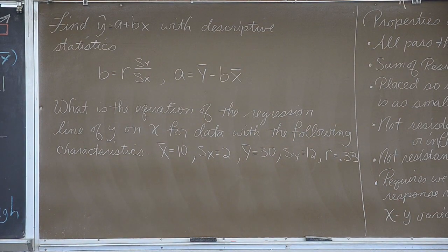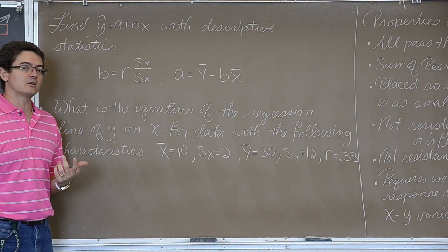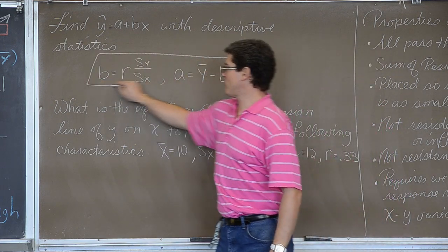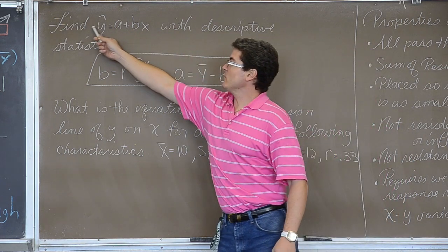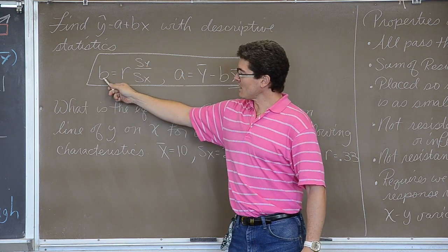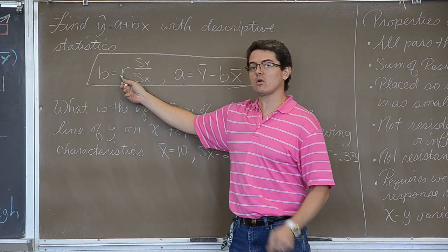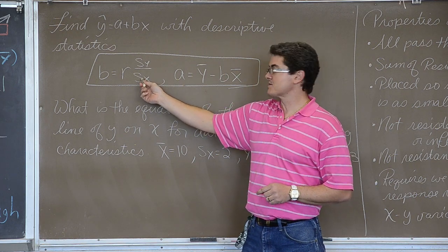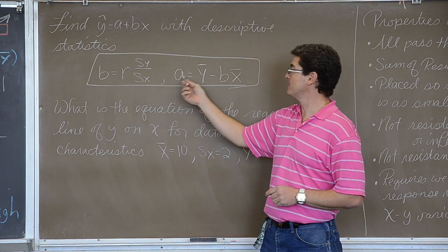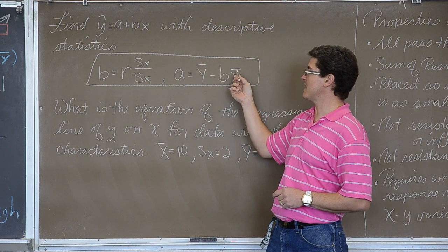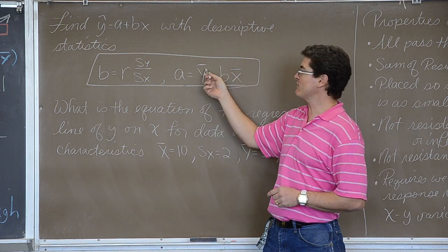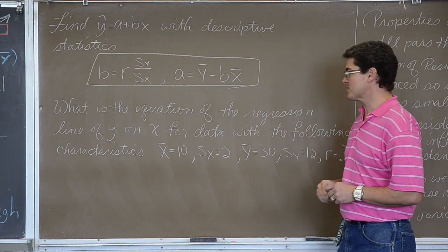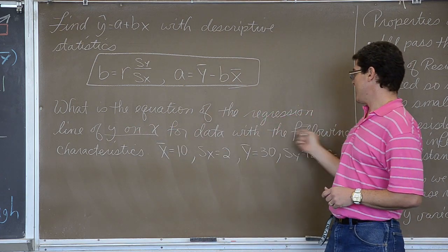Okay, when you take the AP exam, they try and ask you questions that prevent you basically from being completely dependent on your calculator. And here we have one of those examples and some formulas that you will find on your formula sheet when you take the AP stats exam. Find a regression line with descriptive statistics. The slope of a regression line is equal to the correlation value, the strength and direction of your linear relationship, times the standard deviation of y over the standard deviation of x. A, which is your y intercept, is equal to the mean of y minus b times the mean of x. And here's a reminder off of your formula sheet that every regression line goes to the point mean of x, mean of y. What is the equation of the regression line of y on x, that is the standard language in your textbook, for data with the following characteristics?